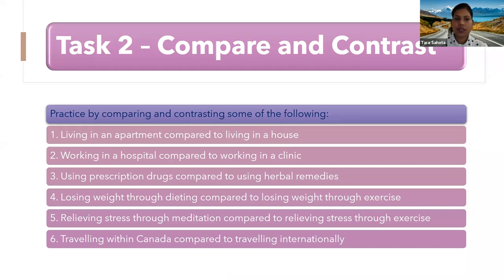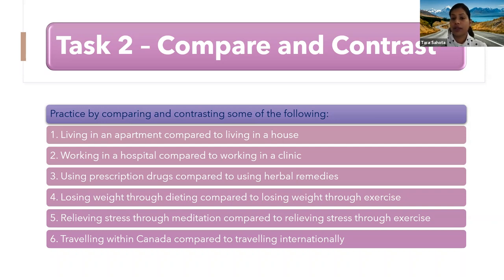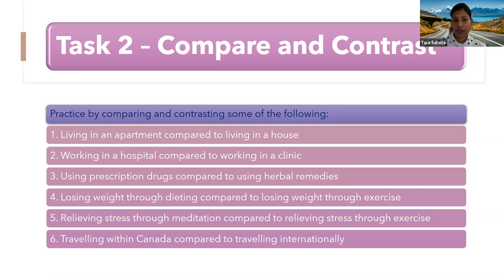Task Two is compare and contrast. You can practice comparing and contrasting situations like: living in an apartment compared to living in a house, working in a hospital compared to working in a clinic, using prescription drugs compared to using herbal remedies, losing weight through dieting compared to losing weight through exercise, relieving stress through meditation compared to exercise, or traveling within Canada compared to traveling internationally. You would have to compare them, contrast them, and give reasons. If you're saying living in an apartment is better, give one or two valid reasons. Give two positive points and one drawback, and support your point of view.